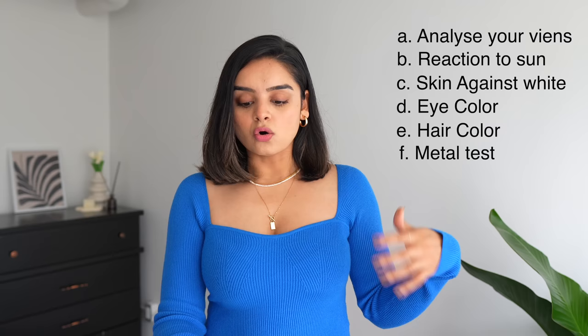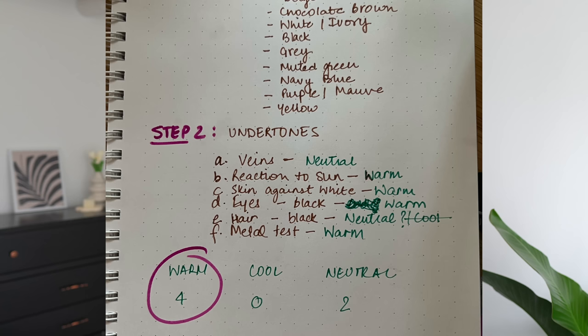Overall we discussed six points — A, B, C, D, E, and F. Here are my results: warm four times, cool zero times, neutral two times — warm wins! I have warm undertones. If your results are three warm and three cool, you're neutral. If results are all over the place, leave a comment or send me an email and I'll help.